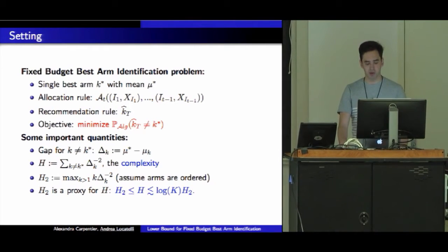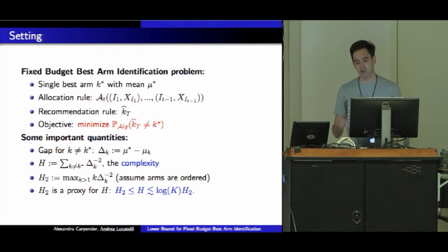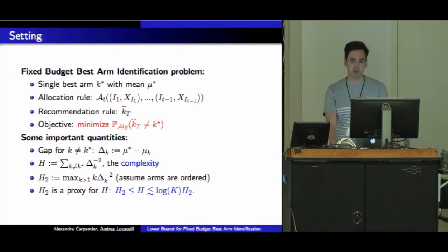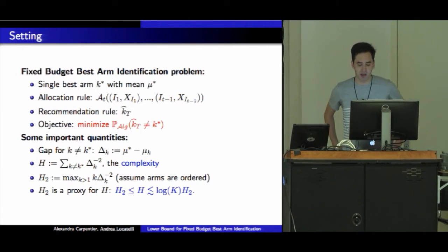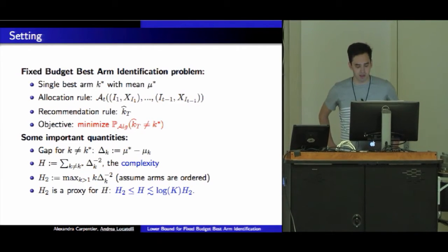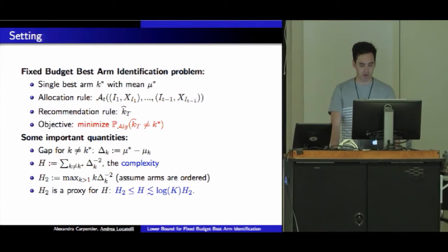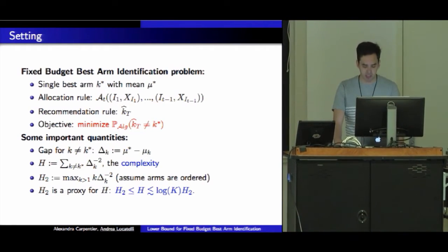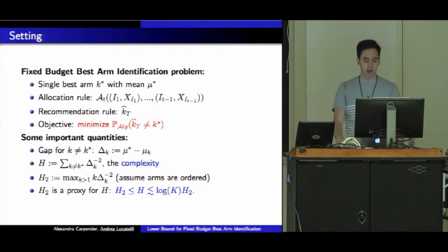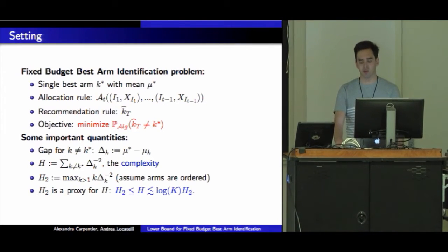Clearly this is a measure of the complexity of the problem because as the arms get closer to the best one, my complexity becomes bigger. There's also a second quantity H_2 that comes up a lot in the fixed budget literature, defined as the maximum over k times Δ_k to the power minus 2. H_2 is a good proxy for H because H_2 is smaller than H, which is smaller than log K times H_2, and this inequality can be tight on both sides.